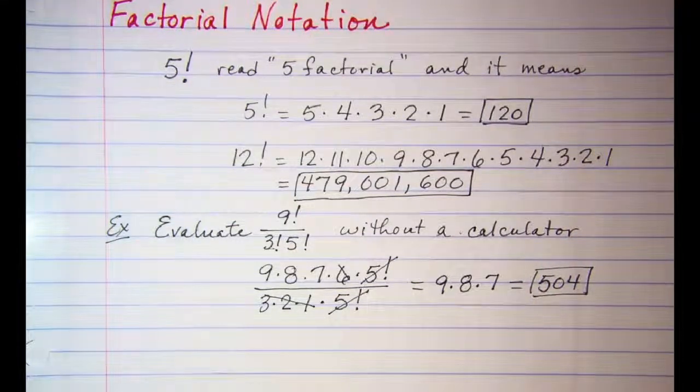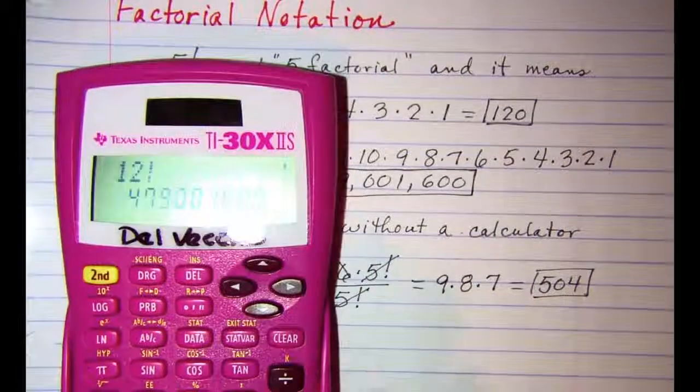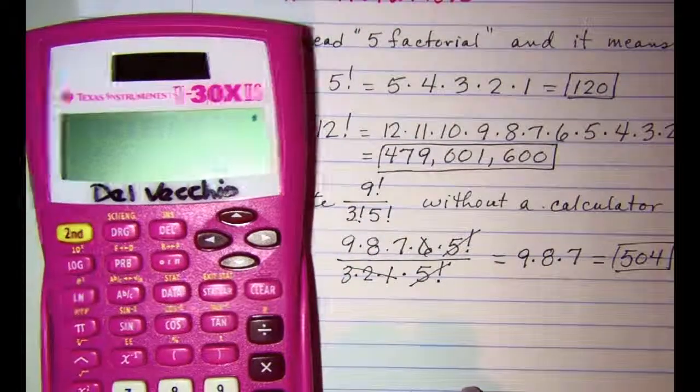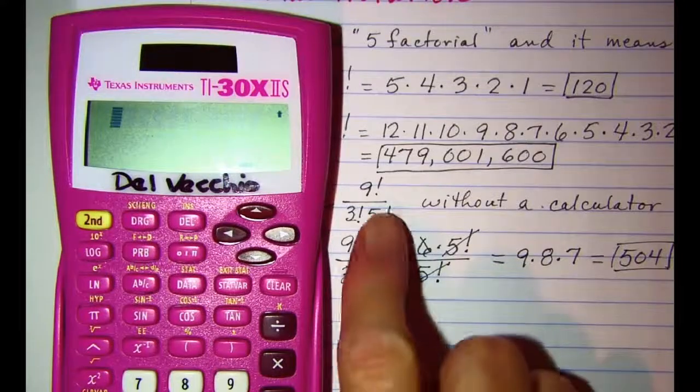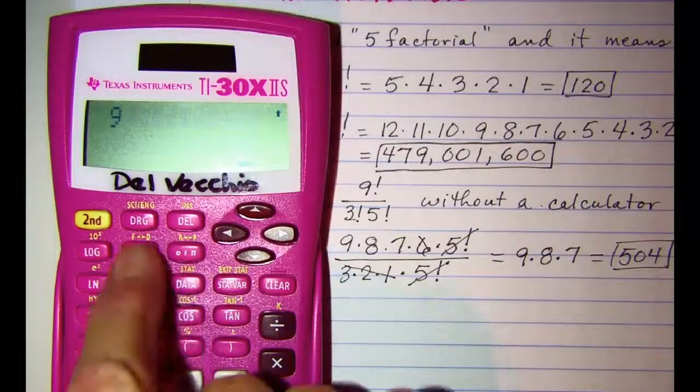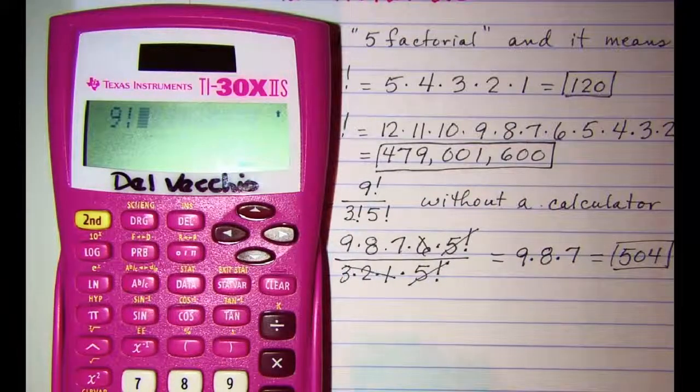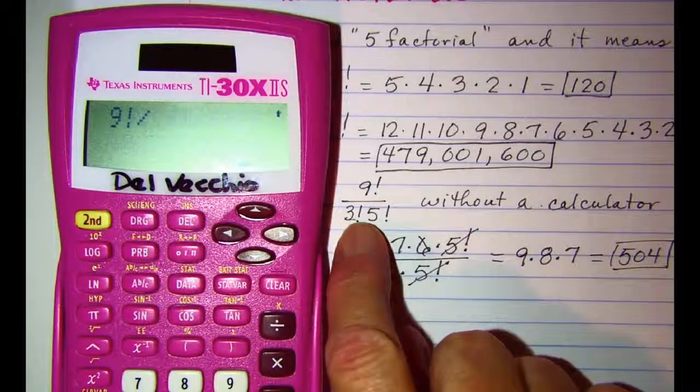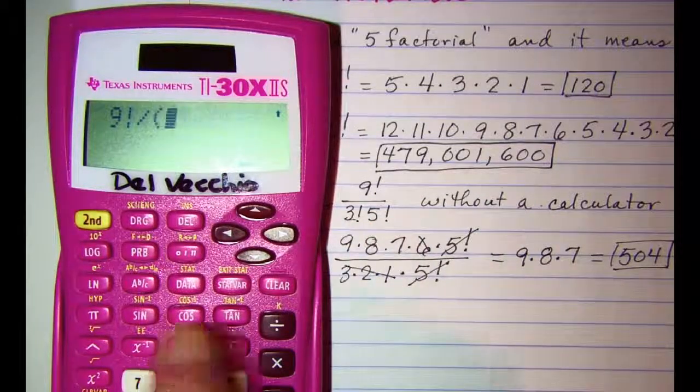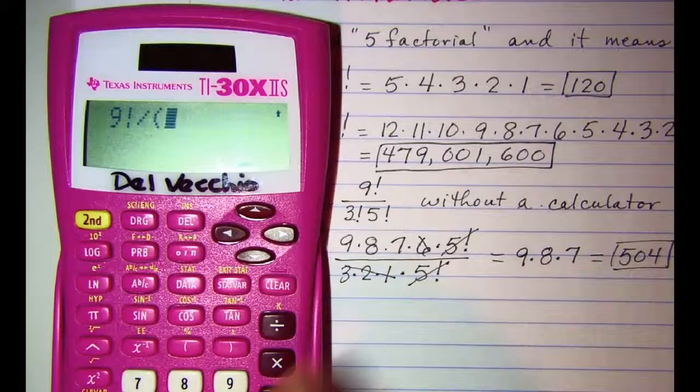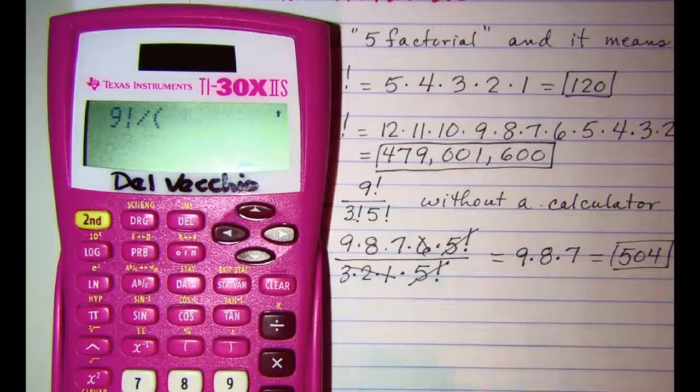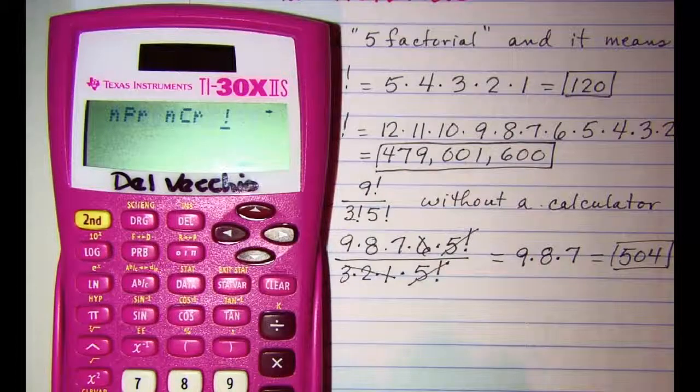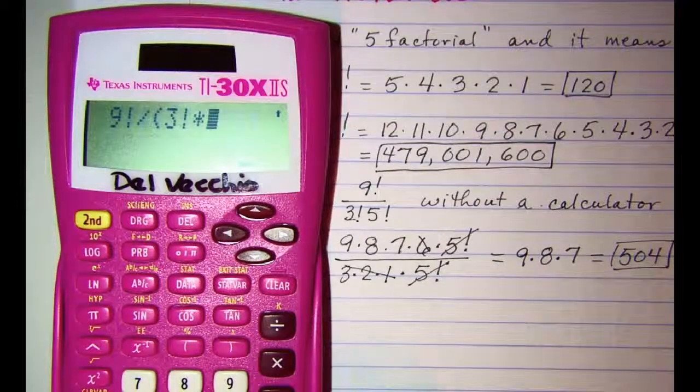If we were doing this on calculator, we can enter our 9 factorial and then divided by, but we have a product in the denominator, so we'll need to open parentheses and enclose that product in parentheses, so 3! × 5!.